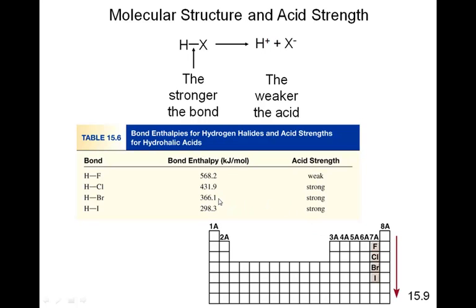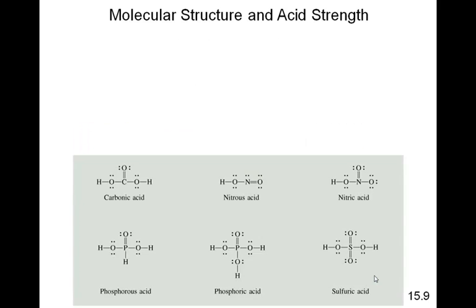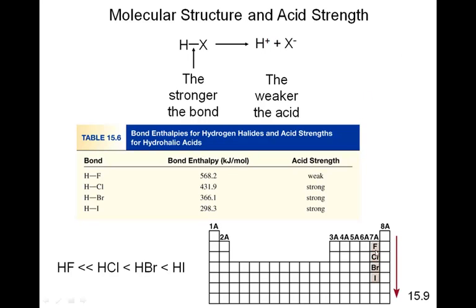HBr is the next weakest bond, so it's the next strongest acid. Then HCl, the least strong acid of these three. And because HF's bond enthalpy is pretty large, it ends up being a weak acid, not a strong acid. So the order is: HF is very, very weak compared to HCl, which is weaker than HBr, which is weaker than HI. We can look in the periodic table and see that the strength of the acid increases as we go down this group. So molecular structure and acid strength for binary acids is completely and totally dependent upon the strength of the bond, which can be measured by the bond enthalpy.